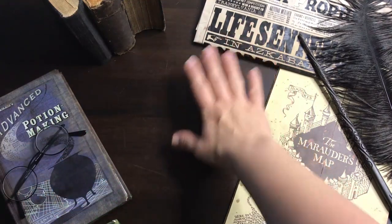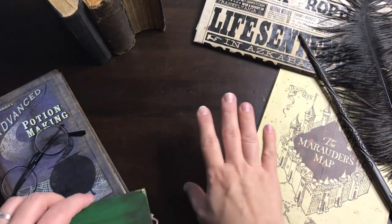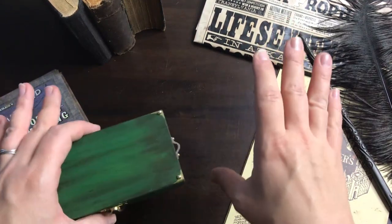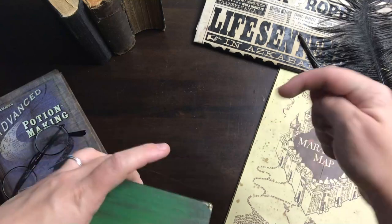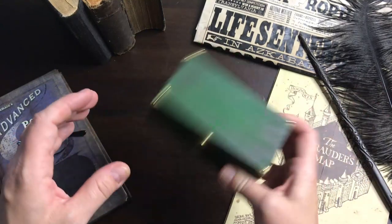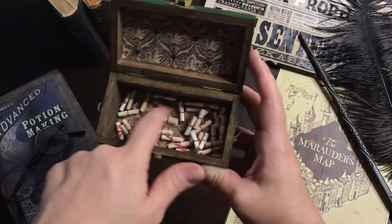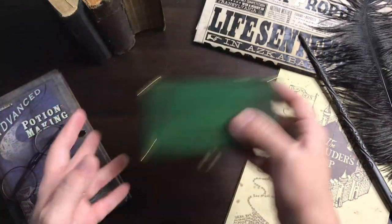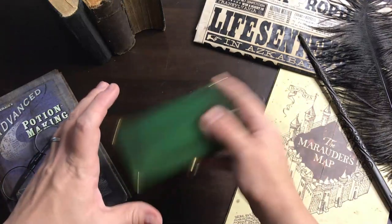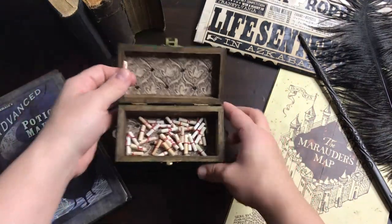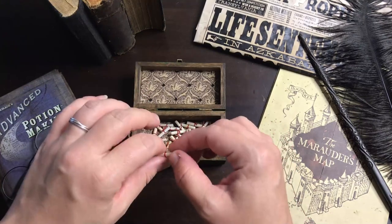If you're interested in any of the props on my table, Denny from Wizardry Workshop has these available on his website. I will leave all the details down below. Here are all the little scrolls. Shake them up, pick one. Let's see what we get.